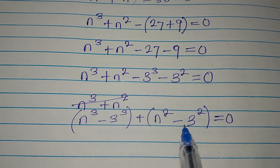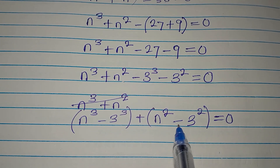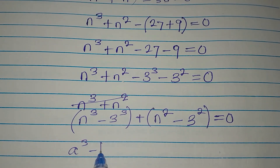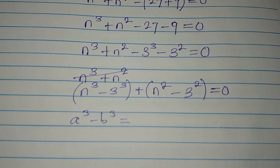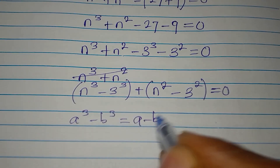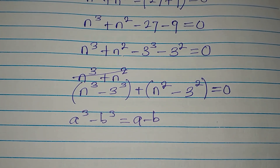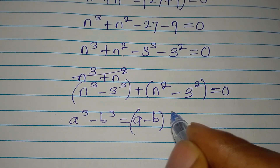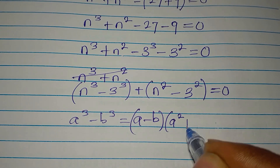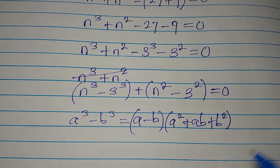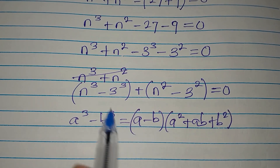Imagine you have a to the power of 3 minus b to the power of 3 — this is the difference of two cubes. This is the same as a minus b, then multiplied by a squared plus ab plus b squared. So this formula is for the difference of two cubes.